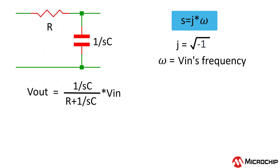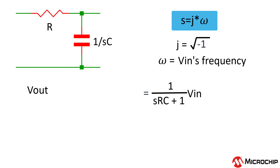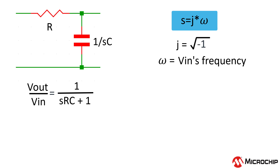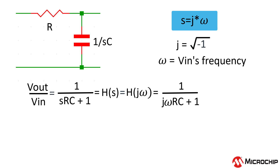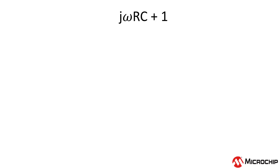Let's rearrange a little by multiplying the top and the bottom by S times C so that our output voltage looks like this. Now we're going to get our transfer function by bringing Vin over to the other side to get V out divided by Vin. Usually when we look at a transfer function, we call it H of S or H of J omega. So in our case, H of S is equal to 1 divided by SRC plus 1. Or replacing S with J omega, H of J omega is equal to 1 divided by J omega RC plus 1.